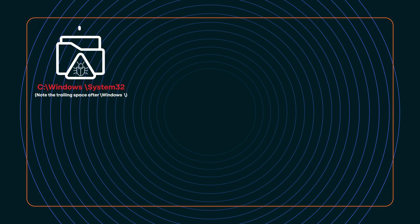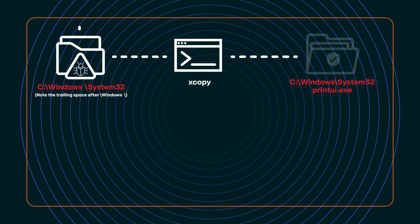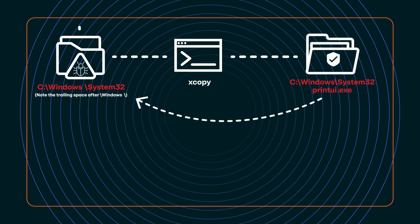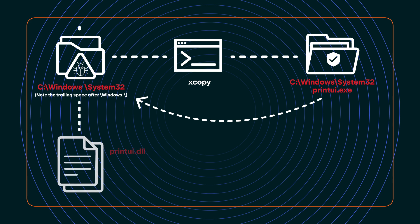The malware goes on to use xcopy, and they use that to move a legitimate copy of printUI.exe into the new folder that's been created — that's masquerading as the real System32. Then it goes on to create a printUI.dll that's executed via DLL side-loading. So they make it look like it's the correct printUI.exe executing from the system folder, but it's not — it's maliciously created.